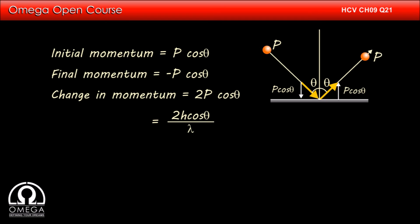Putting p is equal to h by lambda, we get change in momentum is equal to 2h cos theta by lambda. This is our answer.